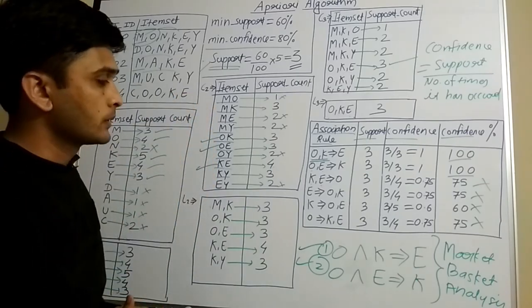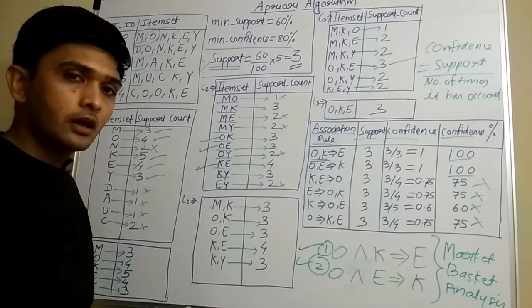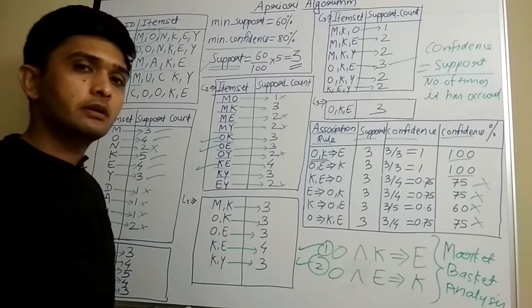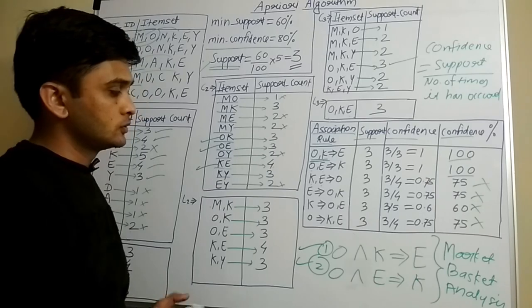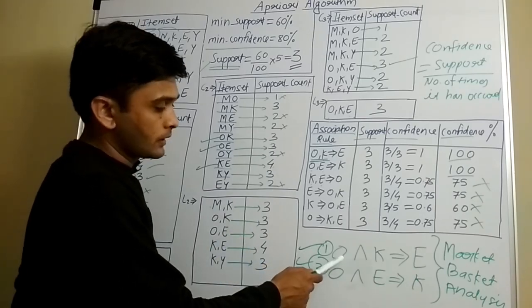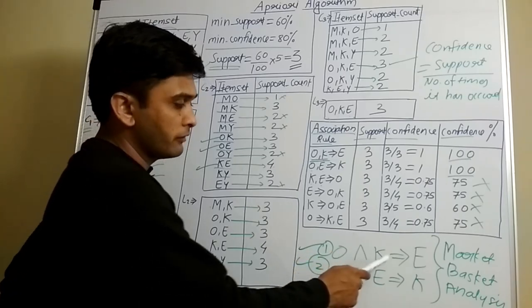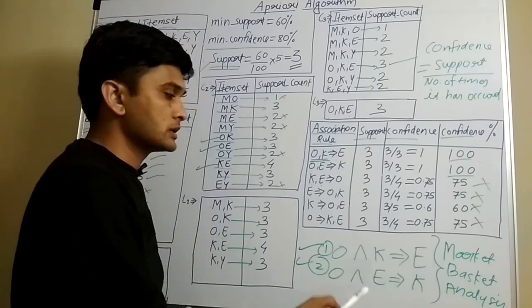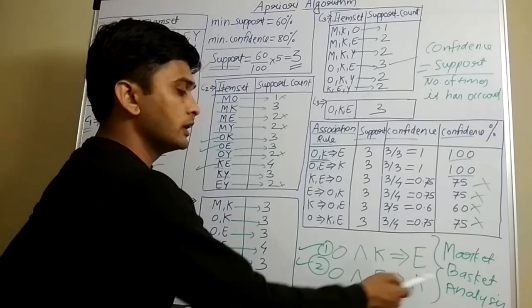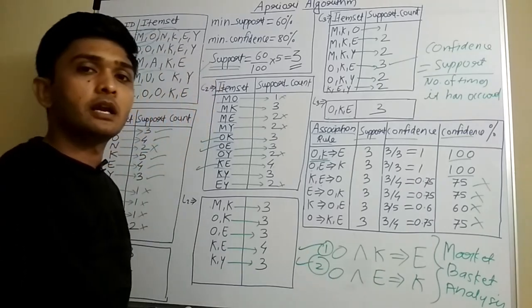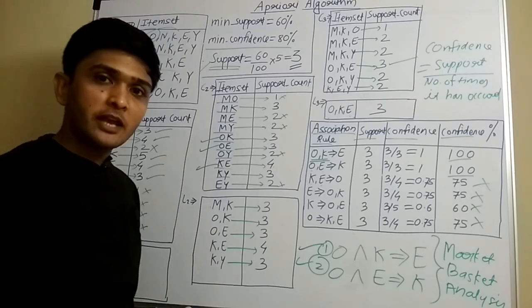So it is very simple to get association rules from the Apriori algorithm. There are many examples — one of the best is Amazon, where we get product suggestions. This is nothing but market basket analysis. So this is all about the Apriori algorithm in short. Thank you very much for watching.